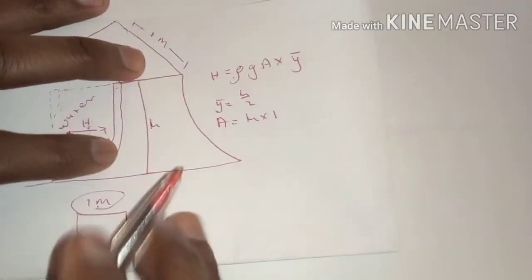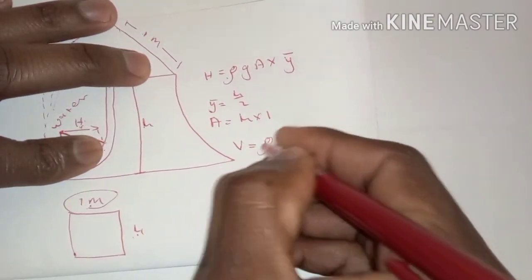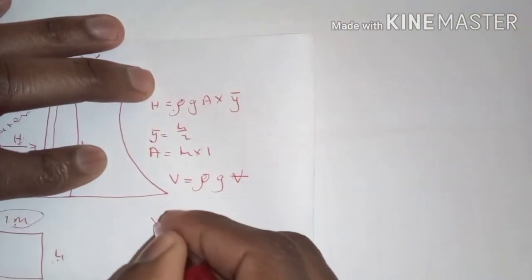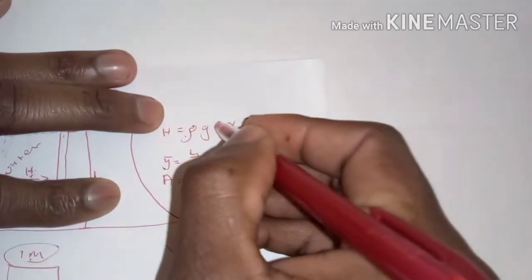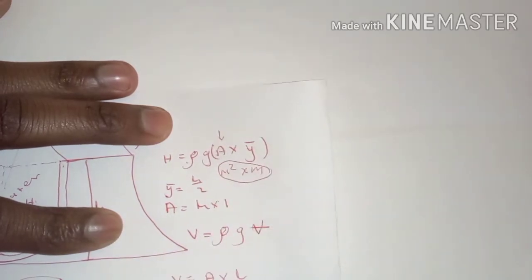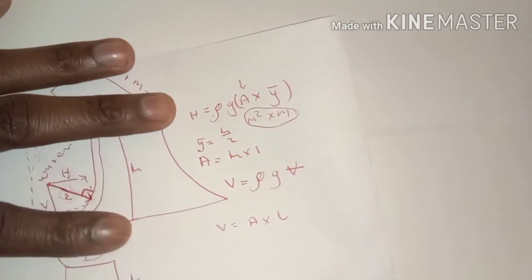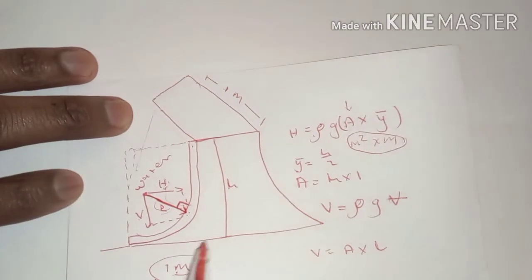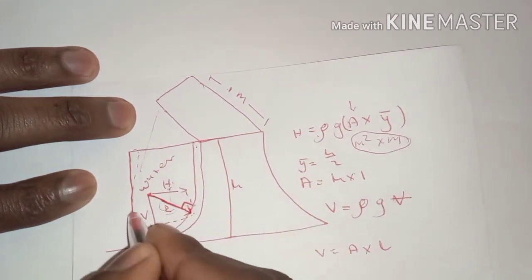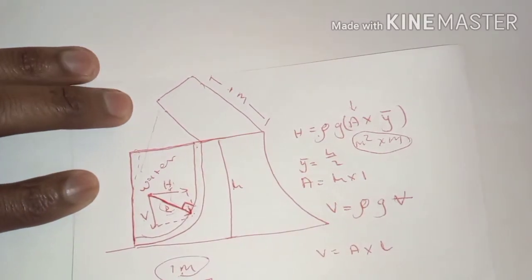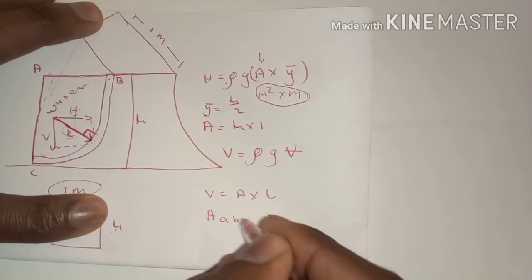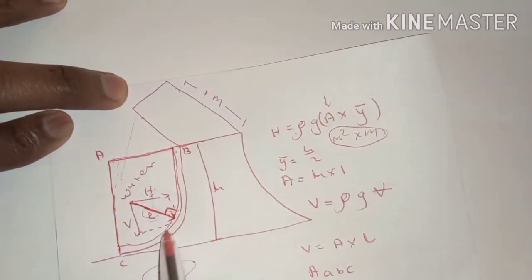For the vertical component V, it is given by ρg times Volume, and Volume equals area times length. We are looking at the volume of water within this structure, so the area we are going to use will be area ABC — the area covered by this portion of the curved surface.